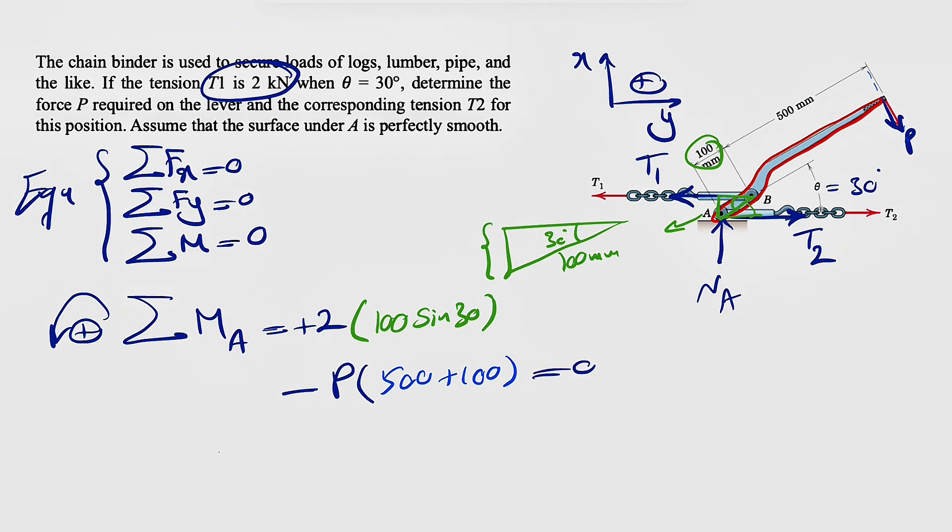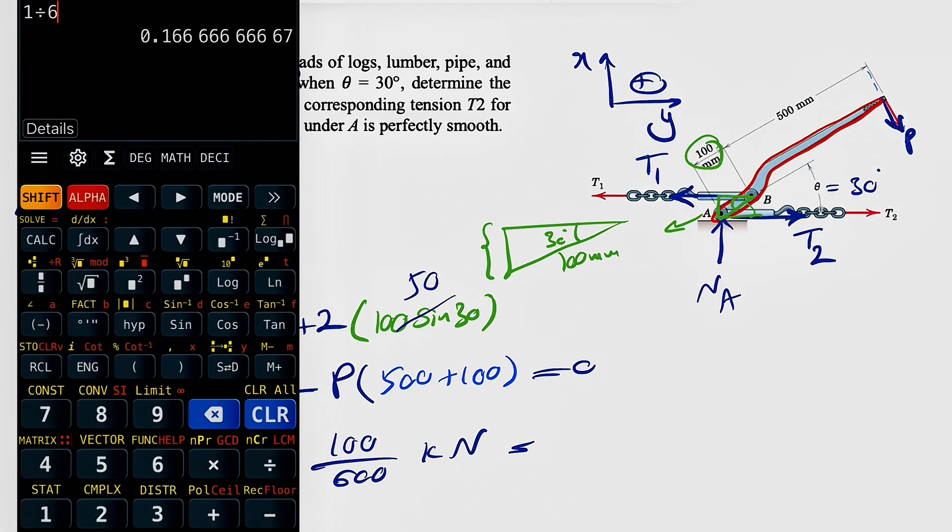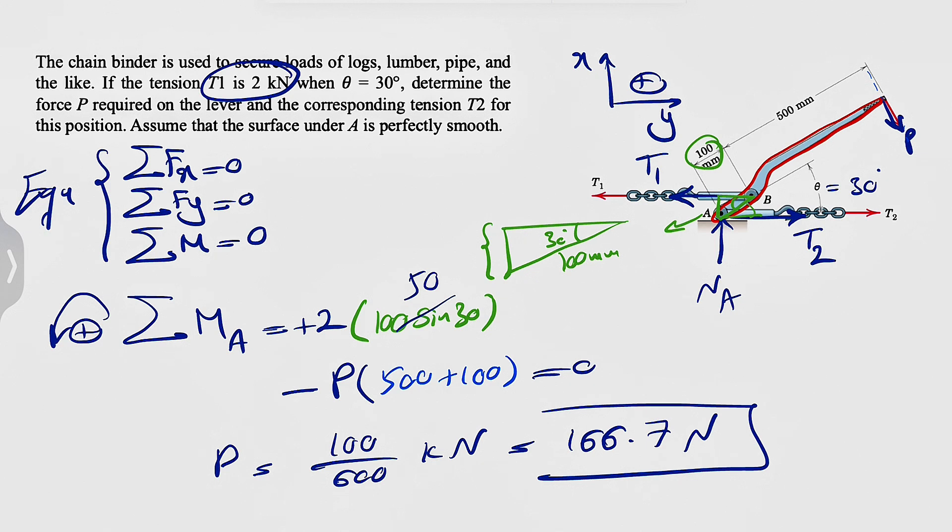The reason I didn't do unit conversion here is because they're both in millimeters, so it will cancel out. At the end, we're going to get P in kilonewton. We know sine of 30 is one half, so our P is 100 divided by 600 kilonewton. Basically, 1 divided by 6, 0.1667 kilonewton, or if we report it in newtons, 166.7 newtons. We found the first unknown.